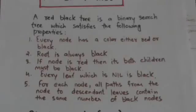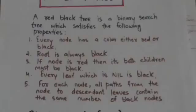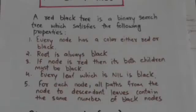Third, if a node is red then its both children must be black. Fourth, every leaf, which is a nil node, is black. Fifth, for each node, all paths from the node to descendant leaves contain the same number of black nodes.